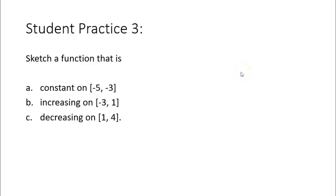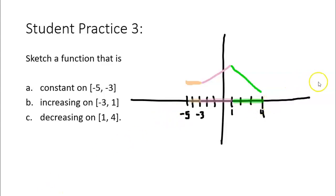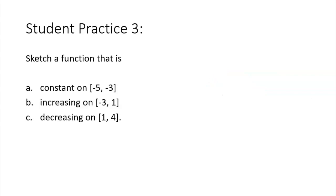For the final student practice, sketch a graph that is constant on the interval from x = −5 to x = −3, increasing from x = −3 to x = 1, and decreasing from x = 1 to x = 4. From −5 to −3 you should have a flat line, then from −3 to 1 a line going up, then from 1 to 4 a line going down. That does it for our lesson today — see you next time!